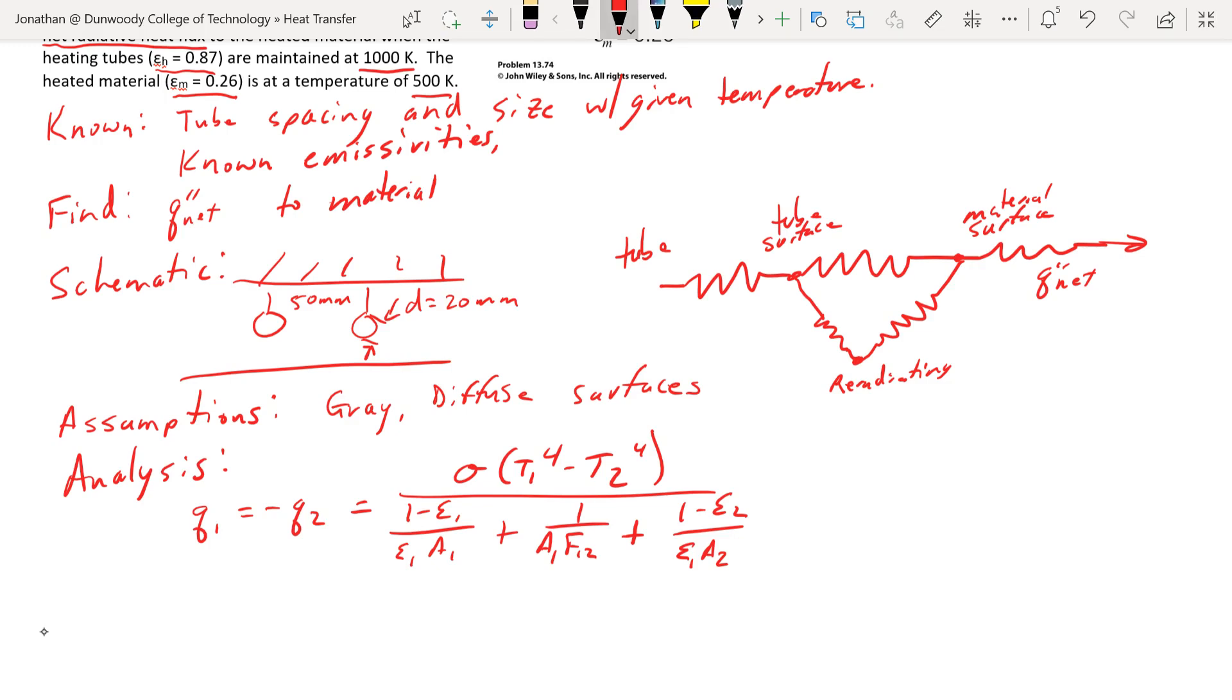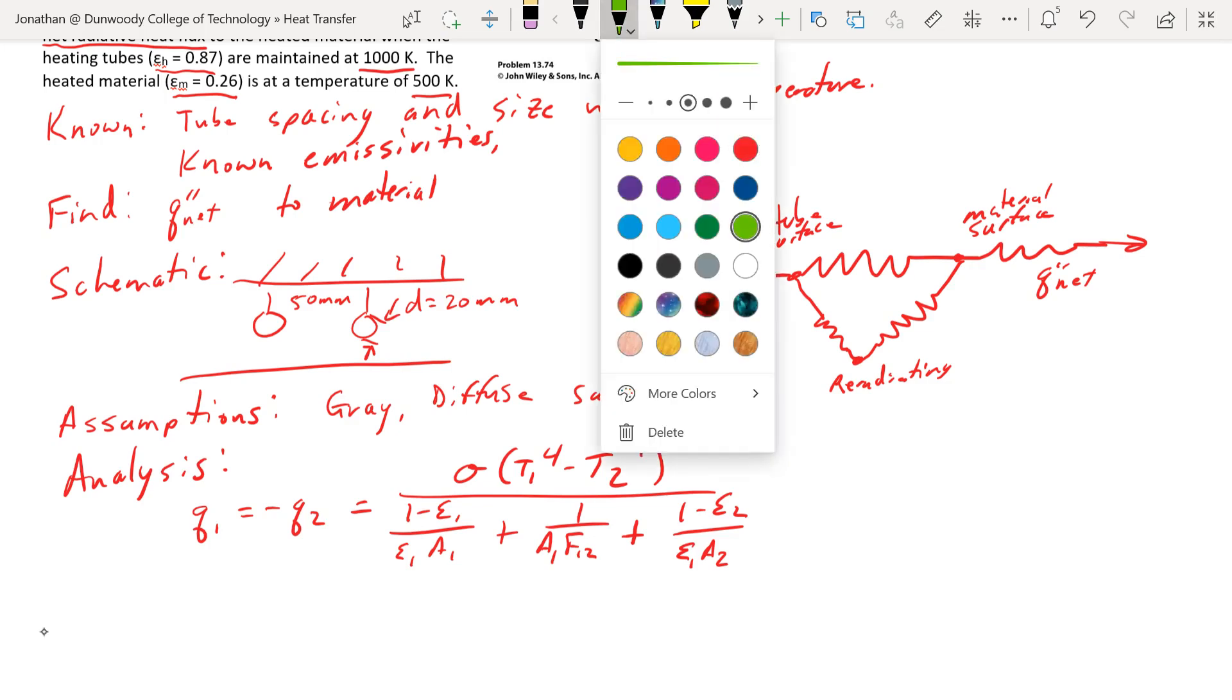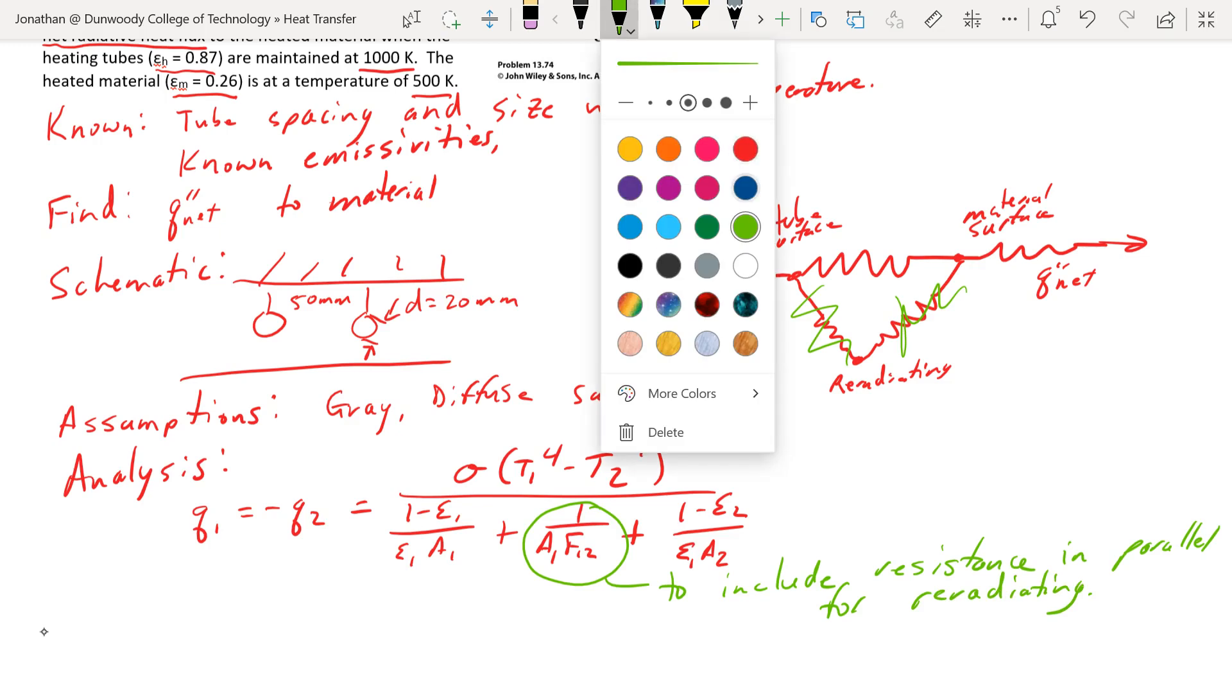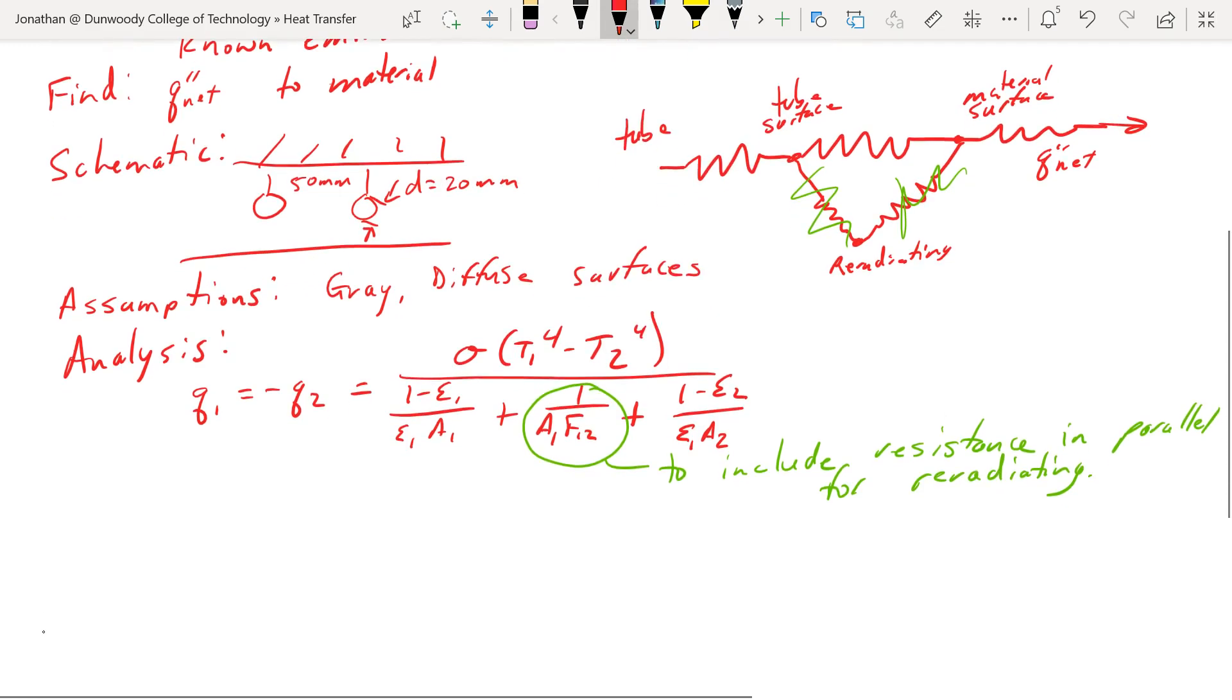So as we look at this resistance network, it looks a little different than that. If we were looking at it for this design, it would be essentially getting rid of this re-radiating surface. We can add that back in by expanding this term to include resistances in parallel for the re-radiating.